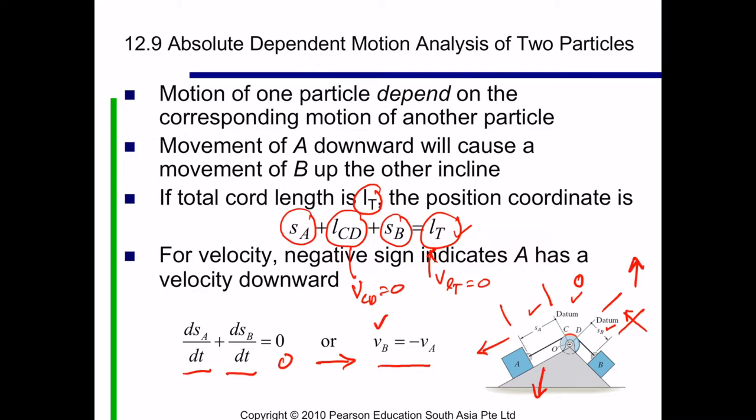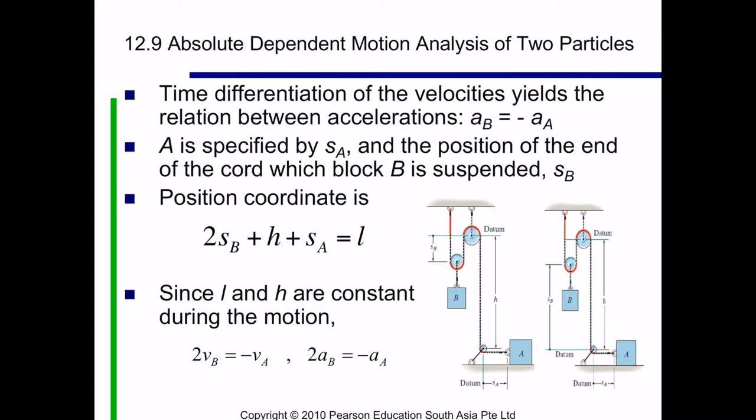The time differentiation of the velocity is the relation between acceleration. Similarly, V dot B equals V dot A, so we have AB equals minus AA.